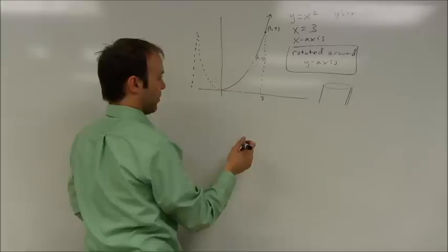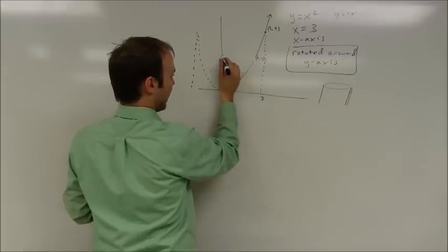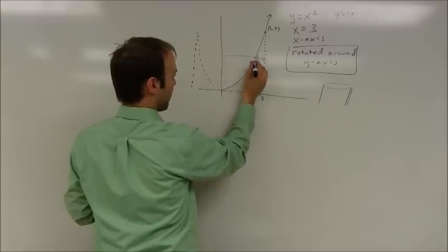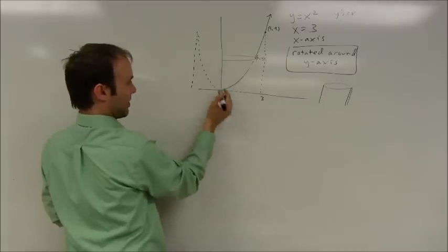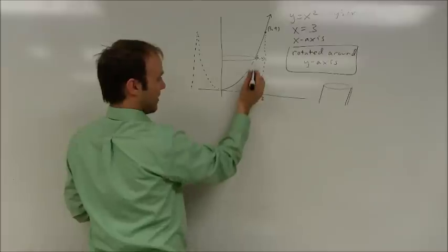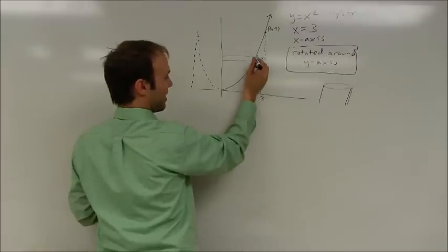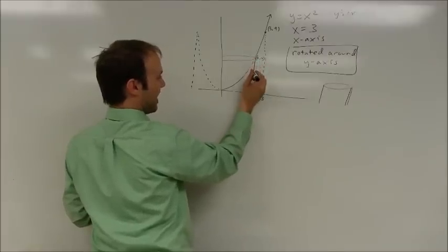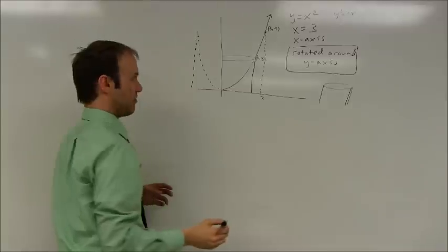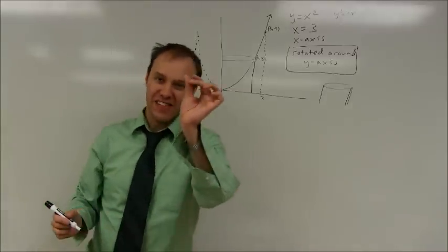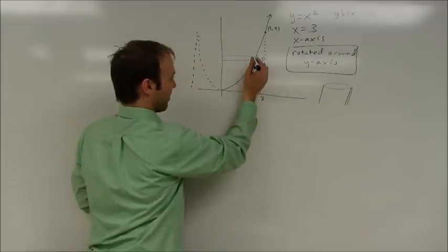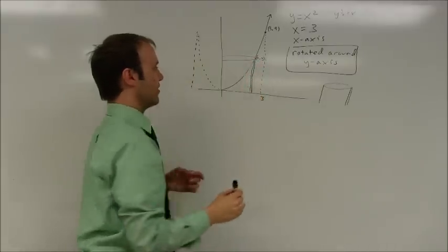So first of all, to draw what this would look like, each of those shells is going to have a point that's on the original curve, and of course that will come around to the other side as well. And the shell will have a height that's basically the height of that graph, and that shell has a thickness. And so I'll usually draw that thickness kind of like this.